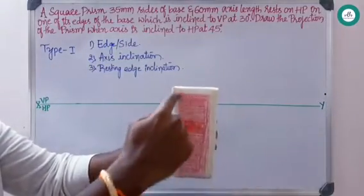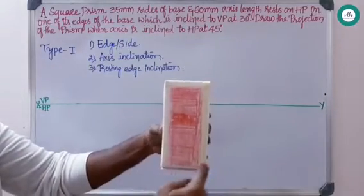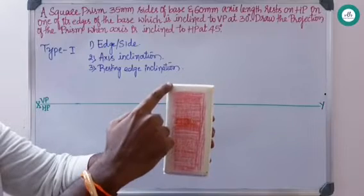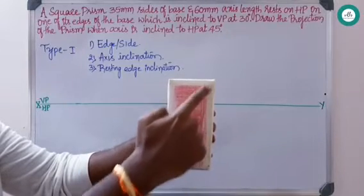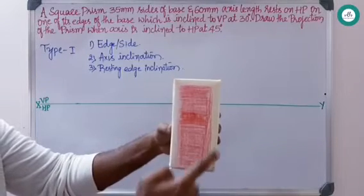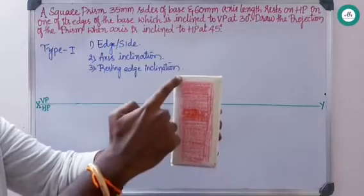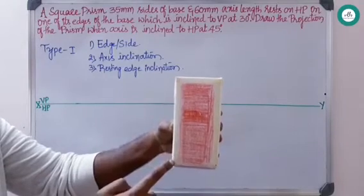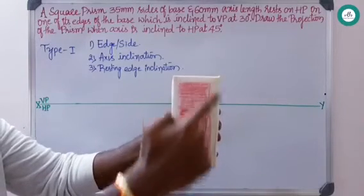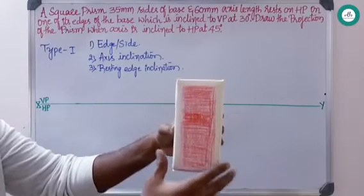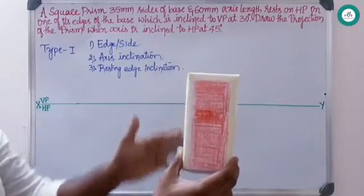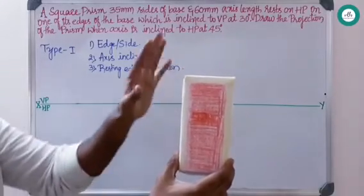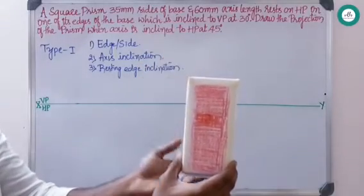When looking from the front, the rectangle face is clearly visible. If A and A1 are on one side and B and B1 on the other, then A–A1 is visible but B–B1 is not visible. Whatever is not visible — C, C1, D, D1 — is written in brackets.